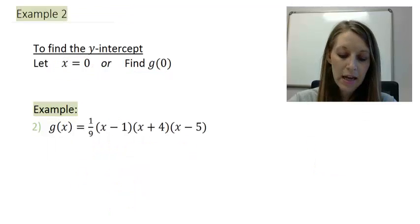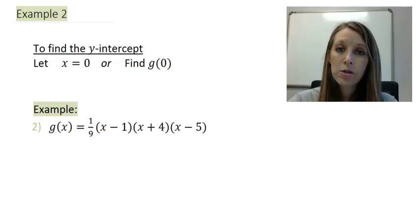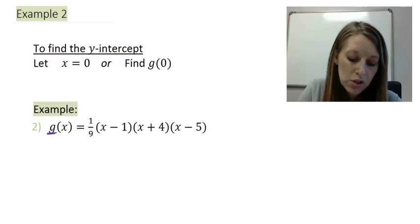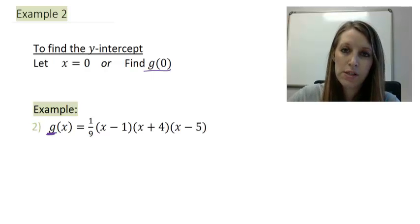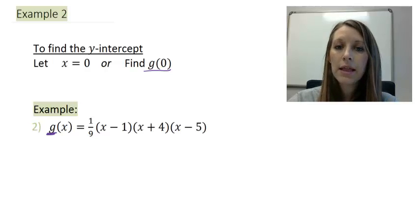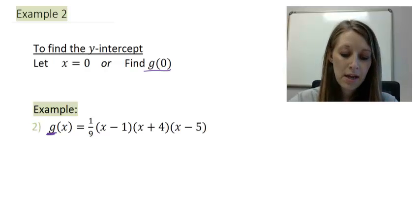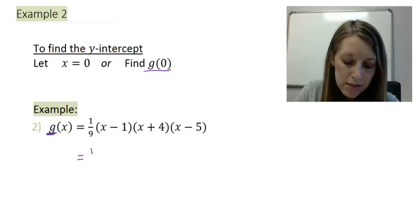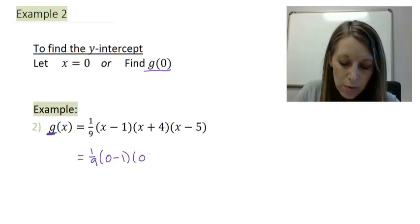So let's move on to a second example of this. I have another polynomial here. So again, I'm just going to let my x value be 0. Or since this function's name is g, I'm going to find g of 0. Now this one's going to be a little bit more work because it's in factored form rather than expanded form. But it's pretty much the same process.